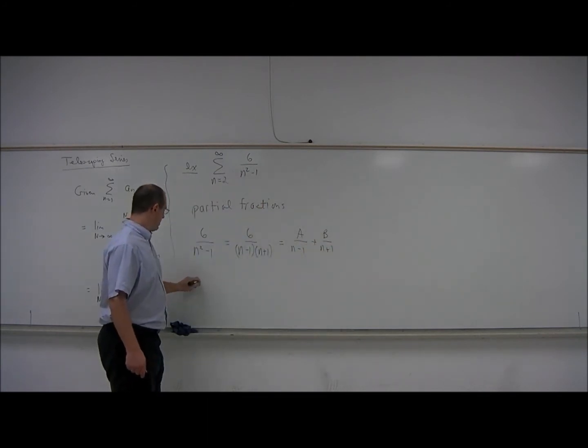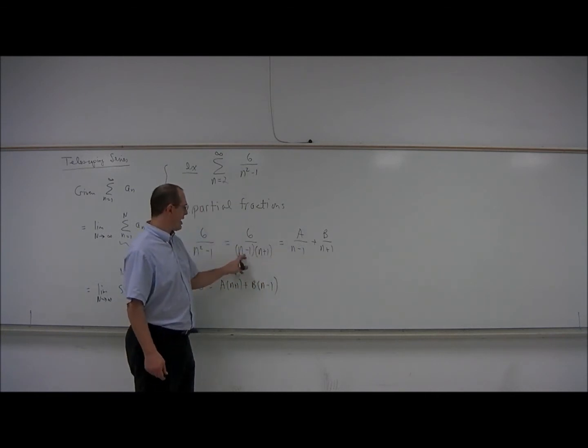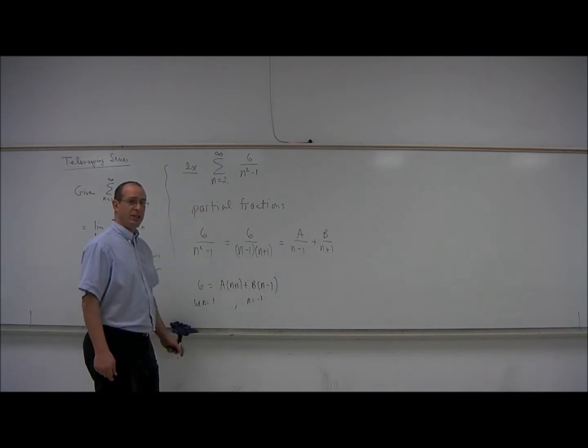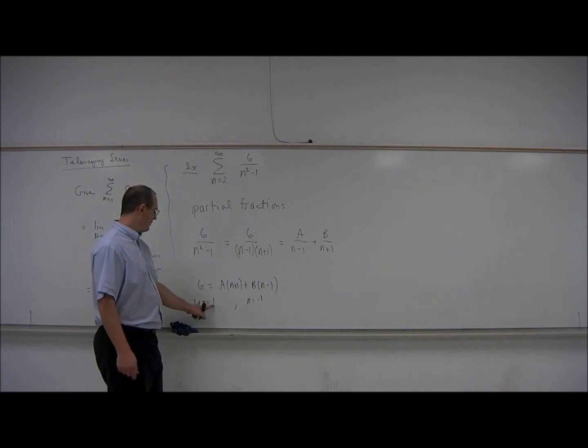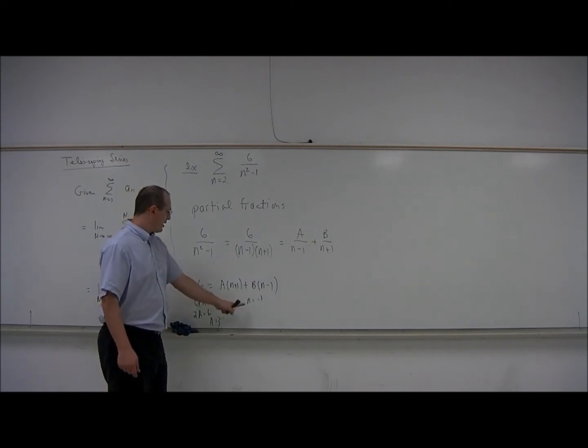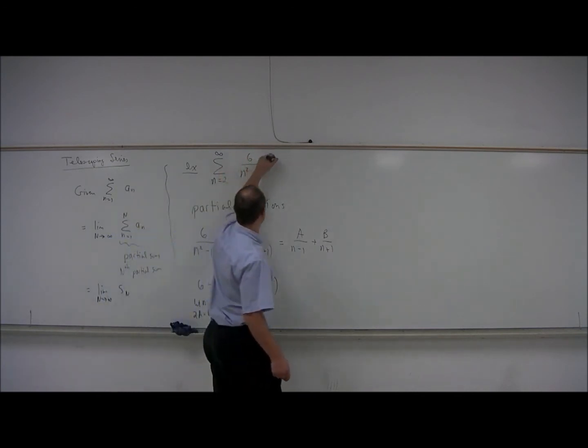And then if we write 6 equals a times n plus 1 plus b times n minus 1, multiplying this second equation here by n minus 1 times n plus 1, and then letting n equal both 1 and negative 1, we will immediately determine the values of a and b. For example, if n is 1, then this is going to disappear and we're going to get 2a equals 6, which means a is 3. And when n is negative 1, then this becomes 0 and we get b times negative 2 is 6, and so b is negative 3.